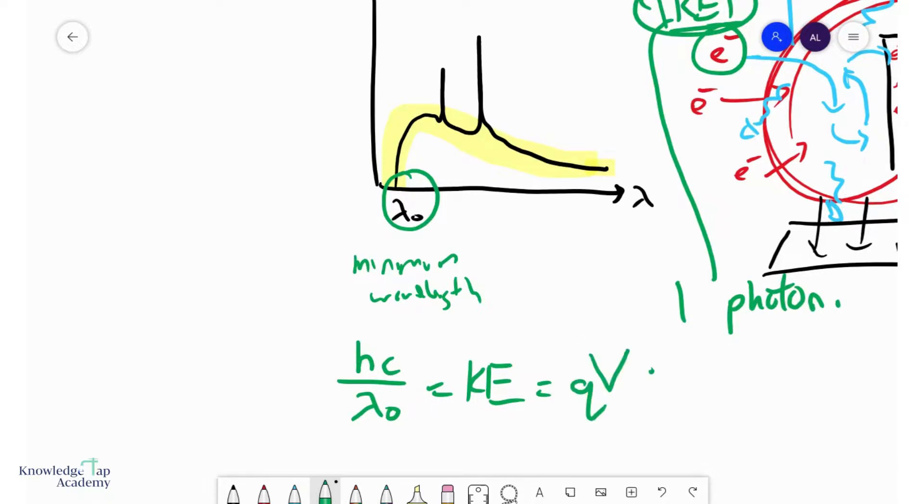And so we can see that the minimum wavelength lambda naught is inversely related to the accelerating potential that accelerated these bombarding electrons in the first place.